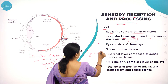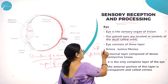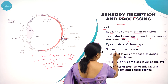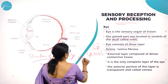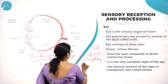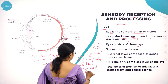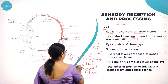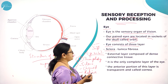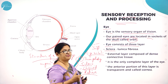The eye is located in the eye orbit on either side of the body. The eye consists of three very important layers. The first is called sclera, the second one is called choroid, and the third one is called the retina. Sclera is also called tunica fibrosa. The white part of the eye is the sclera.